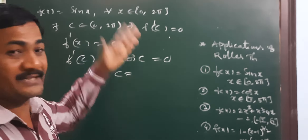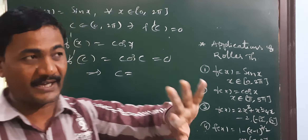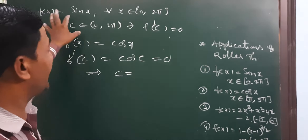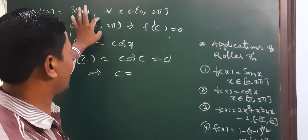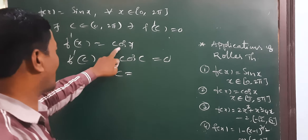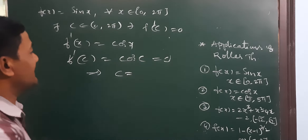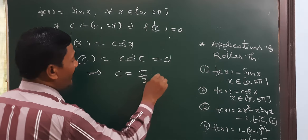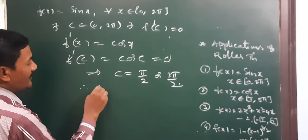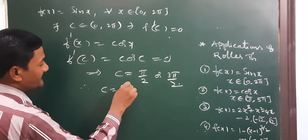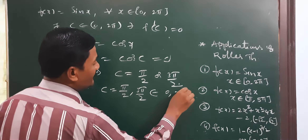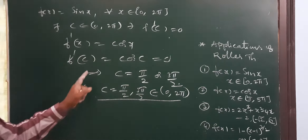So, f(x) = sin x is continuous on closed interval [0, 2π] and derivable on open interval (0, 2π), and f(0) = f(2π). Then by Rolle's Theorem, there exists c in open interval (0, 2π) such that f'(c) = 0. Since f'(x) = cos x, we have cos c = 0, which gives c = π/2 or c = 3π/2. Therefore c = π/2 or 3π/2 belongs to open interval (0, 2π). This is the application of Rolle's Theorem for the first example.